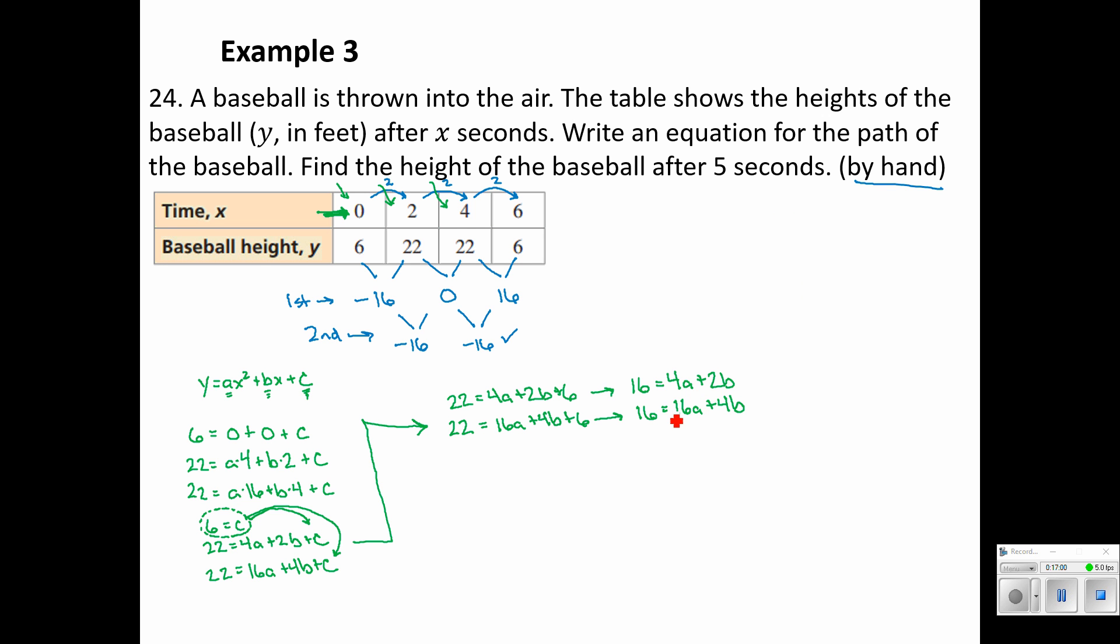I want to combine these with elimination. The b variable looks pretty easy to eliminate. I'm going to multiply this equation by negative 2 and then rewrite it down below. So negative 32 equals negative 8a minus 4b. And if I combine these two equations together, my elimination method takes form. Negative 16 equals 8a. And then the b's cancel out. Divide by 8.